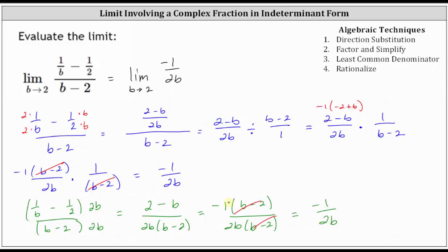The whole point is we can now find the limit by performing direct substitution, since negative one divided by 2b is continuous everywhere except at b equals zero, and we're approaching b equals two. Evaluating by direct substitution, we have negative one divided by the product of 2 and 2, which gives us negative one-fourth for the limit.